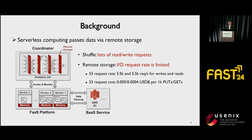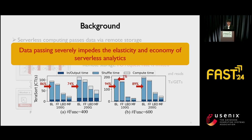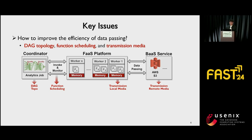Serverless computing passes all data via remote storage. But the shuffle operation incurs a large number of read and write requests to S3 due to all-to-all connections. Remote storage limits every request rate to guarantee fairness and avoid interference among tenants, and it charges in increments of a single request. Therefore, the data passing severely impedes the elasticity and economy of serverless analytics. For example, in sorting workloads with different configurations, up to 94% of the time is spent shuffling data, while the corresponding computation only takes 2% of job completion time.